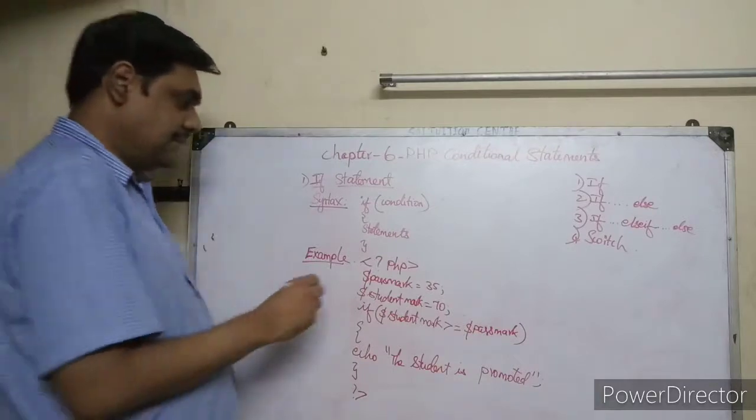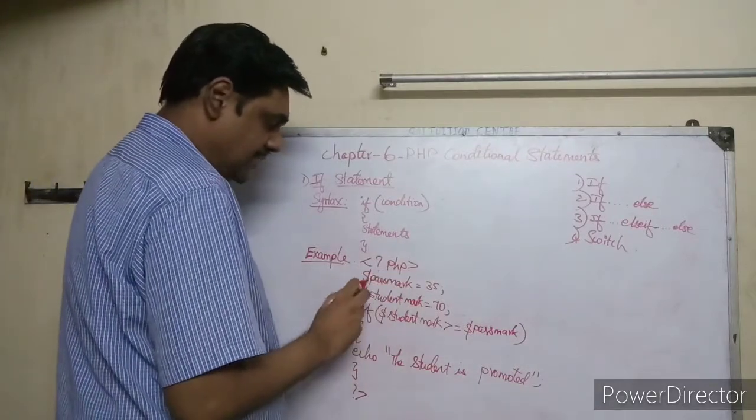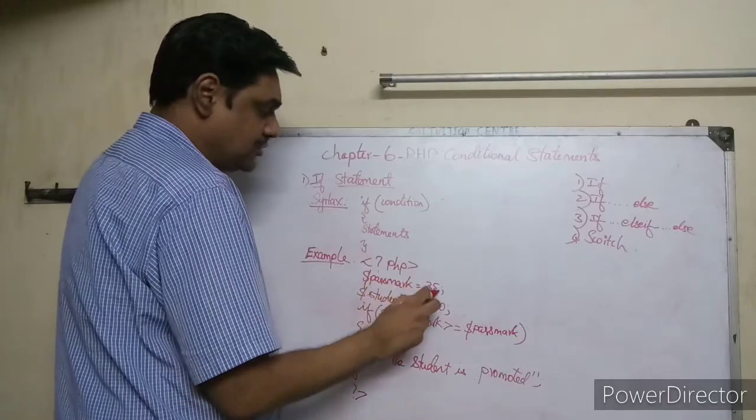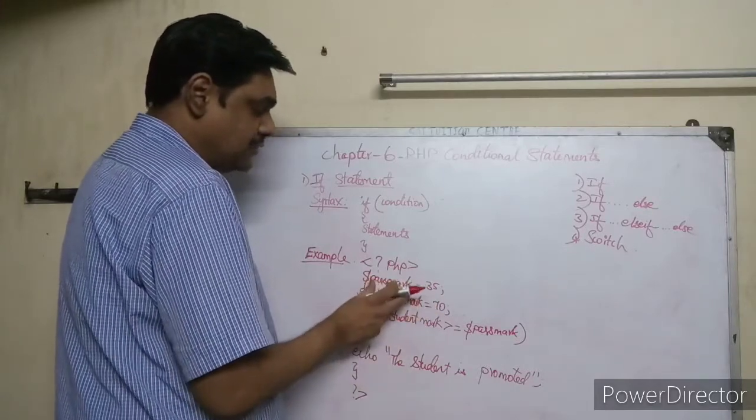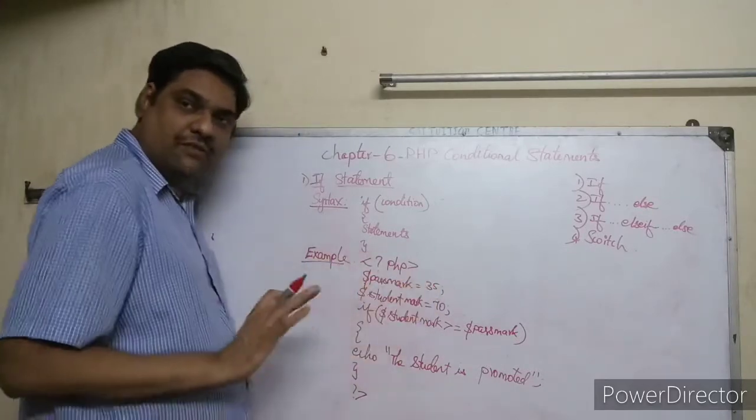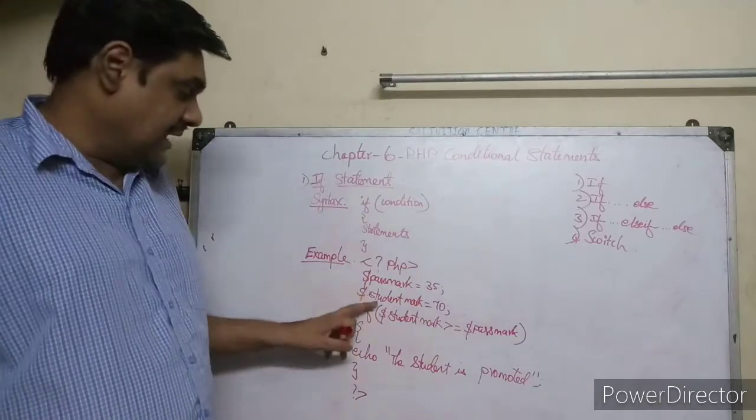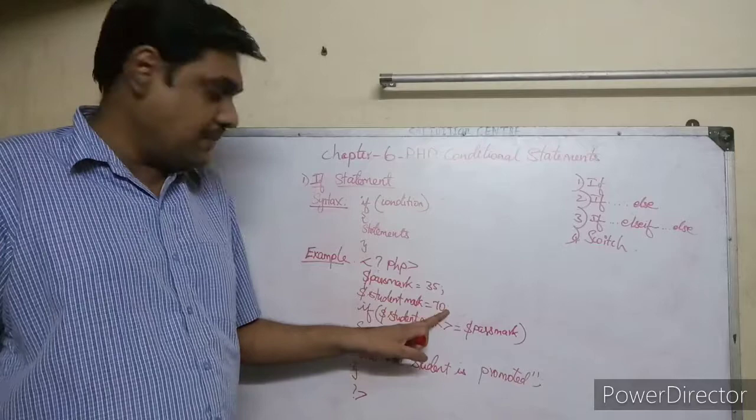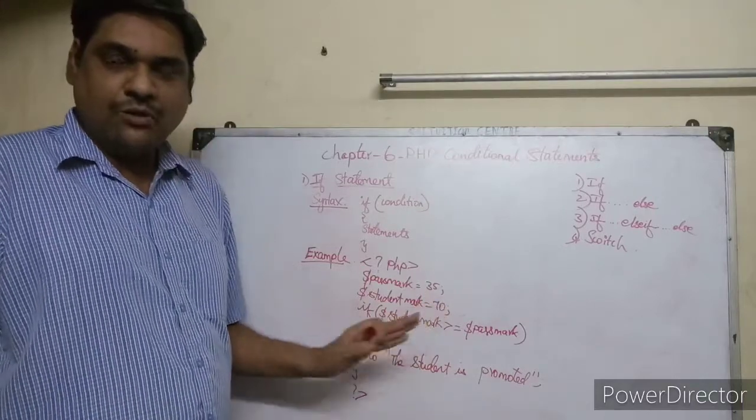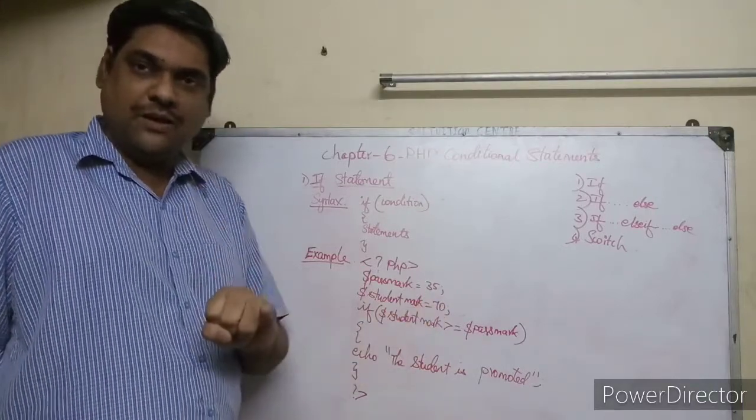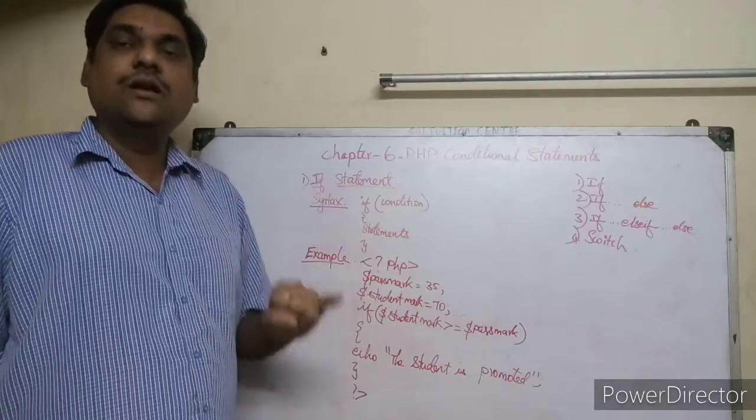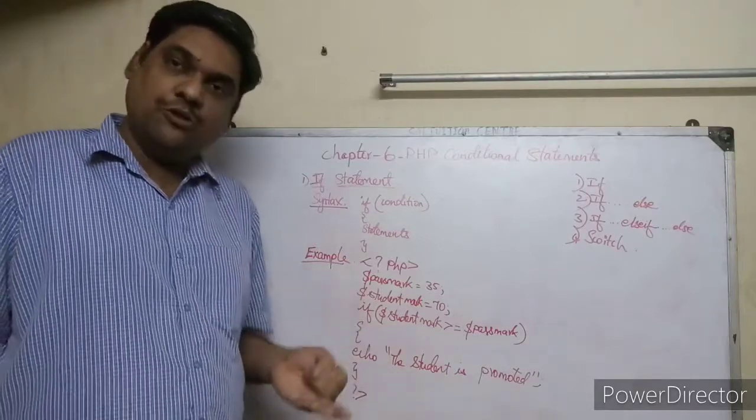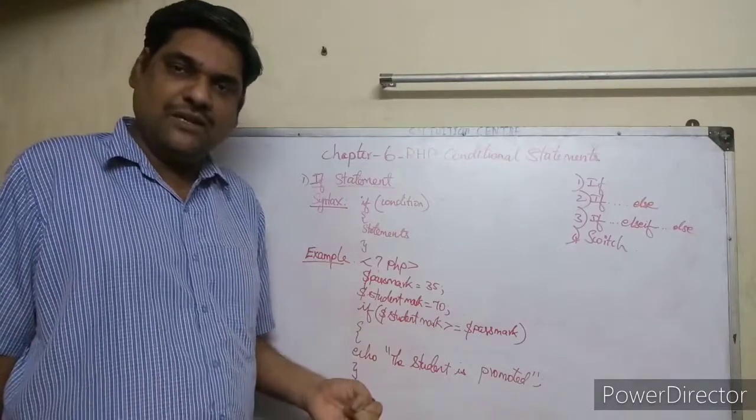For example, in PHP: dollar pass_mark equals 35, creating a variable to store the pass mark. Then dollar student_mark, creating another variable to store the student mark which is 70.